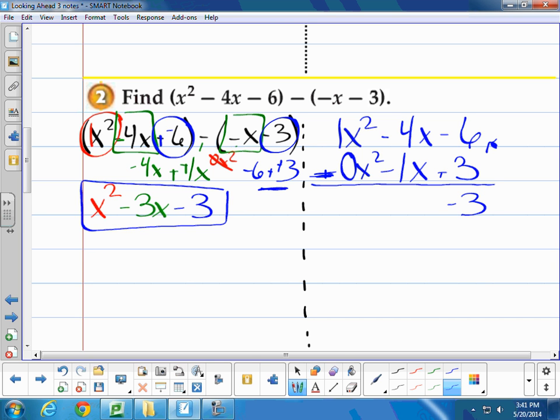Negative 4 minus a negative 1. Again, add that opposite. So I really have a negative 3x. And then that 1 minus that 0, well, 1 minus 0 is just 1. And I don't need that 1 in front, so I can just write that as x squared minus 3x minus 3.